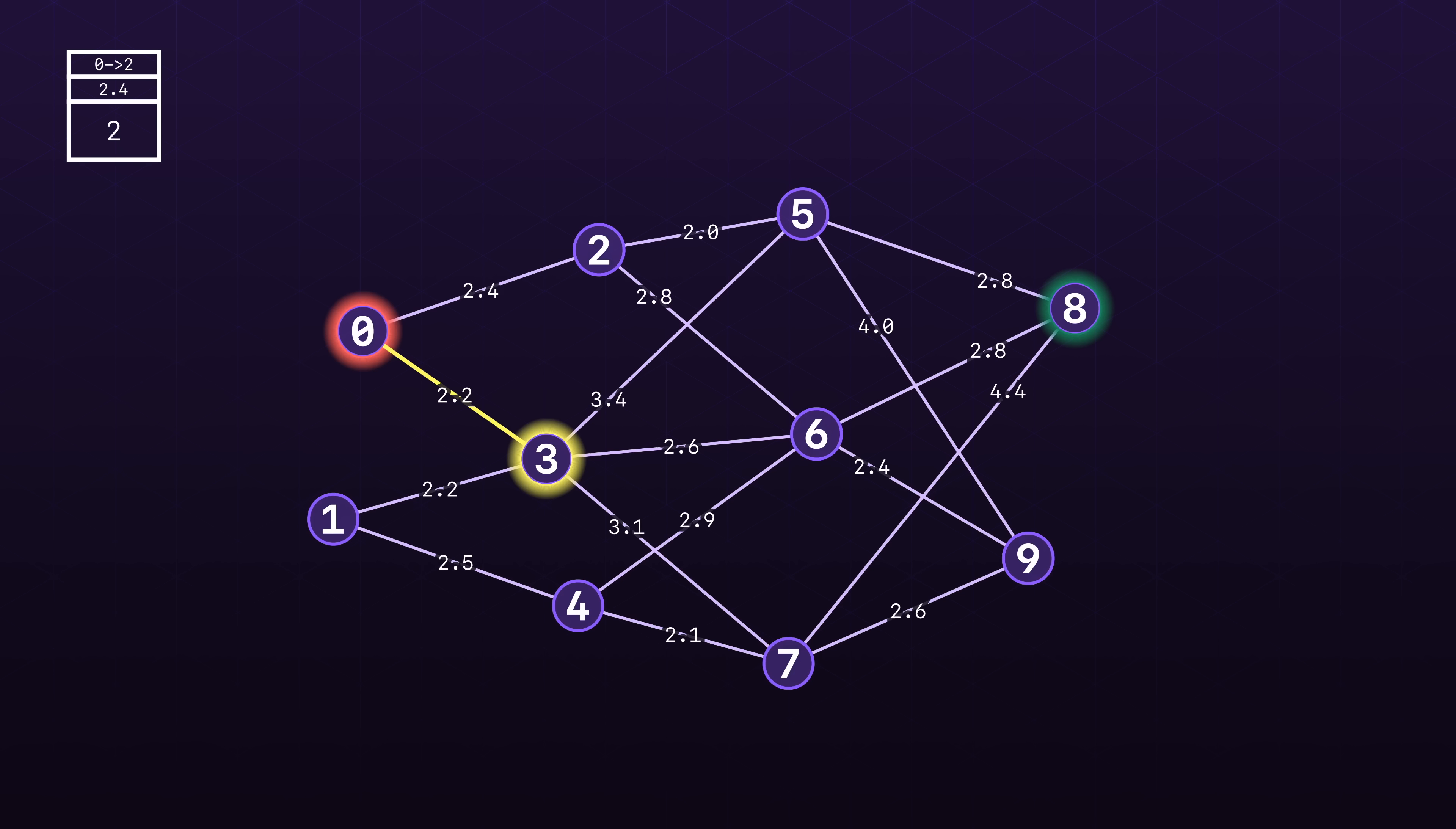The nice property here is that when we've taken a node off the queue, we're guaranteed to have found the shortest path to that node. And we continue this process. From node 3, there are 4 nodes we haven't explored yet, so we can put them into the queue and the total cost it would take to reach these nodes. We then pop off the next node from the queue and proceed.